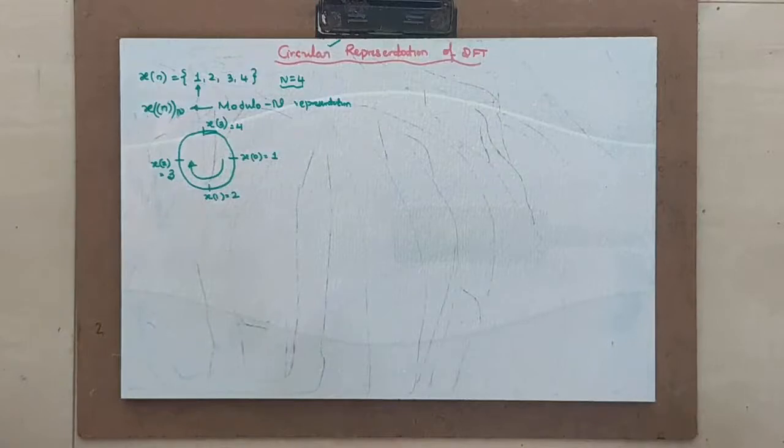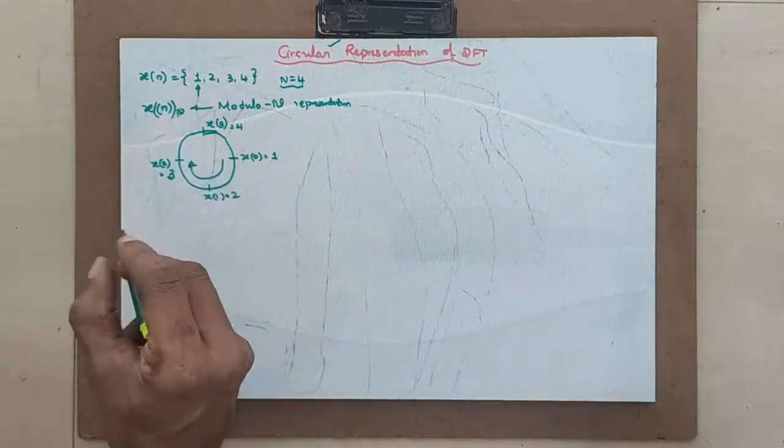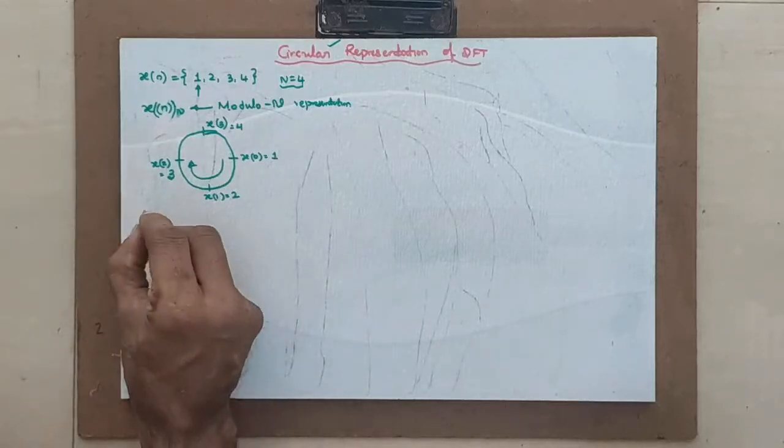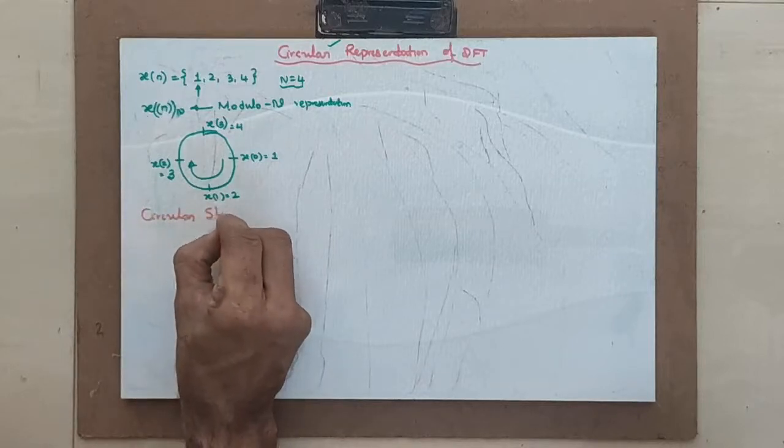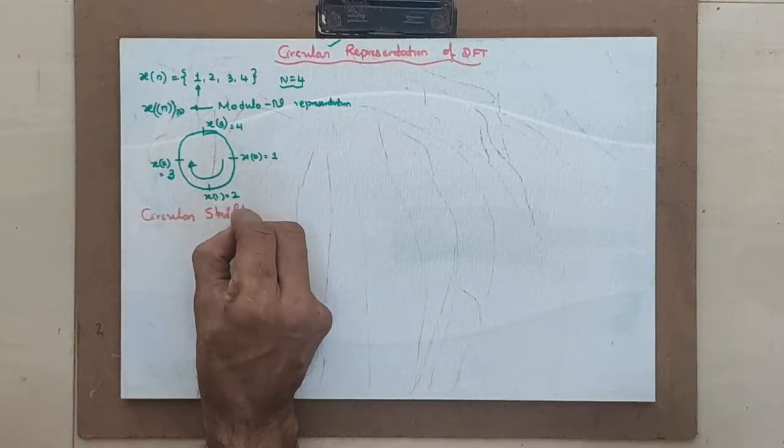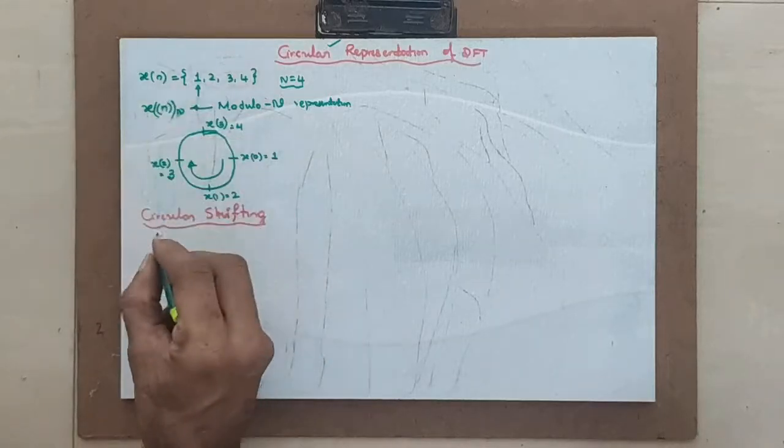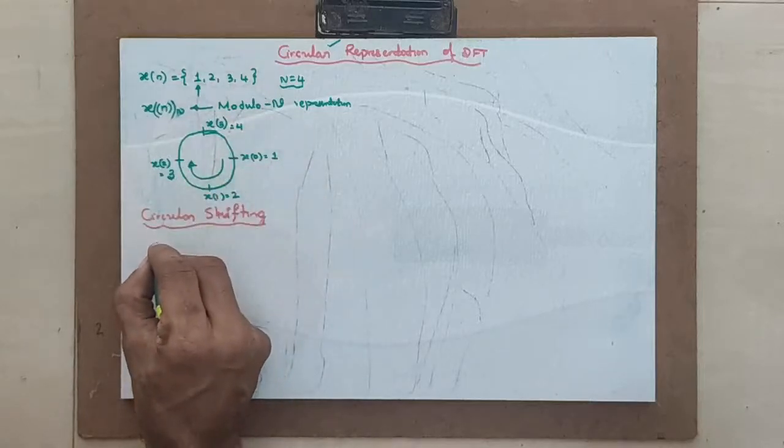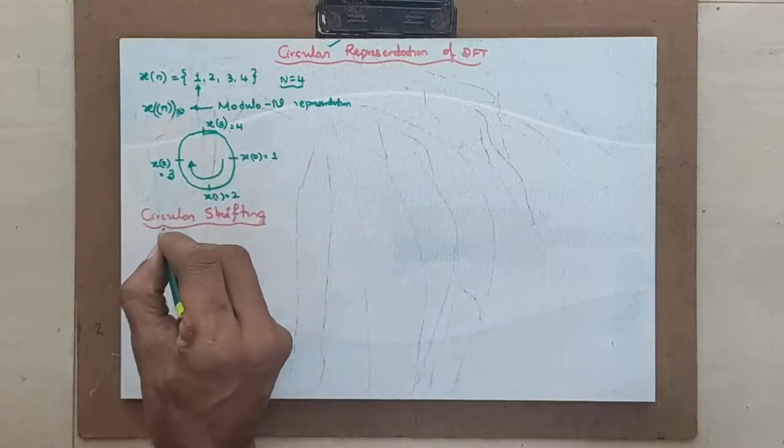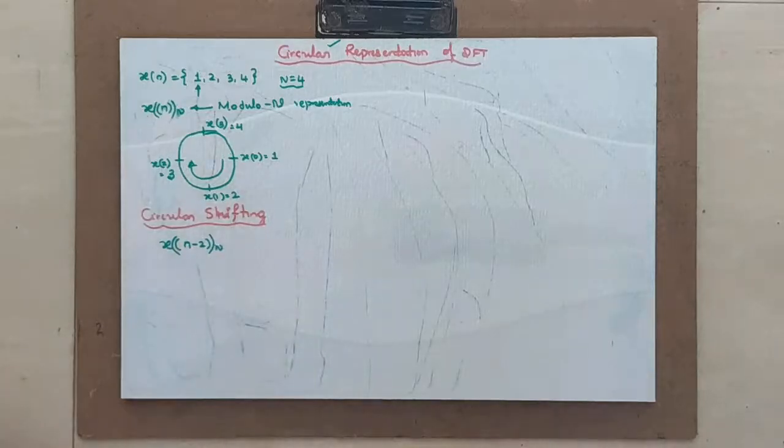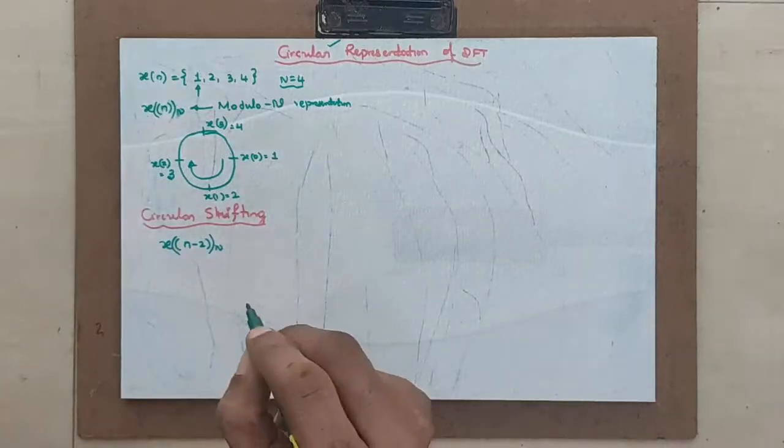Now, see this circularly represented signal, whatever it is, I try to shift it. It is called as circular shifting. What exactly is circular shifting? Now, given signal, I represent it as circular fashion or circular manner or modulo n manner. Now, x of n minus 2 modulo n. What exactly is this new signal?